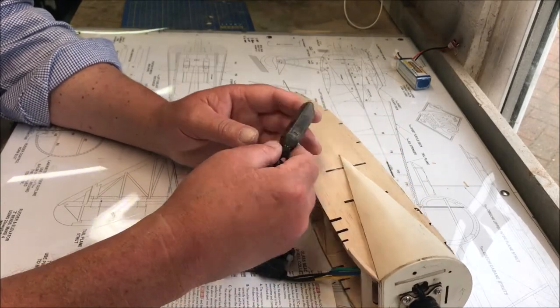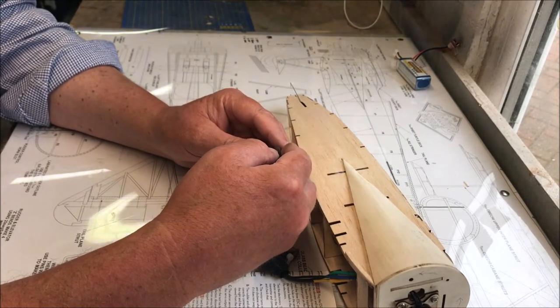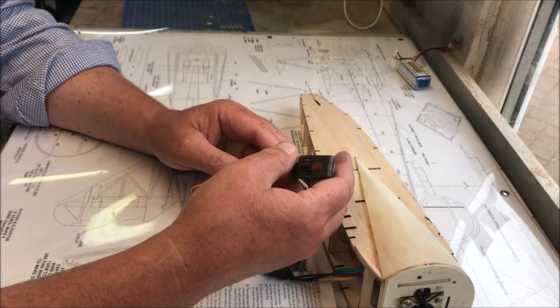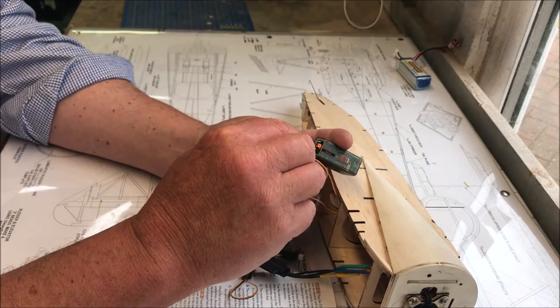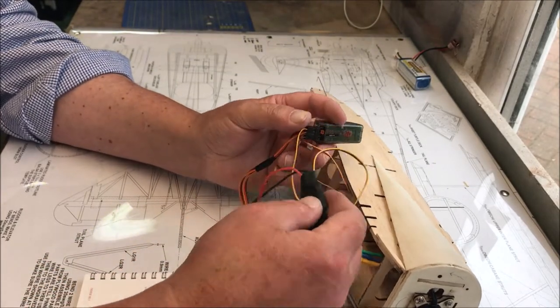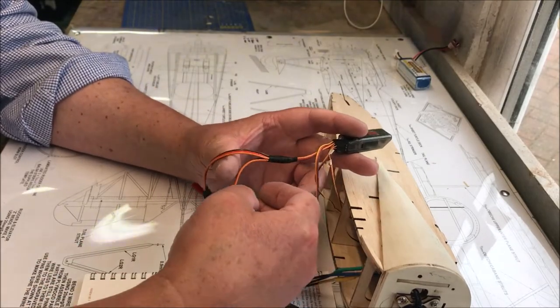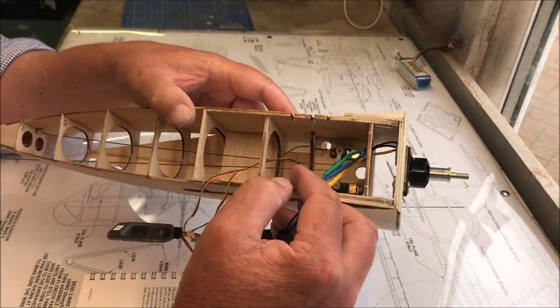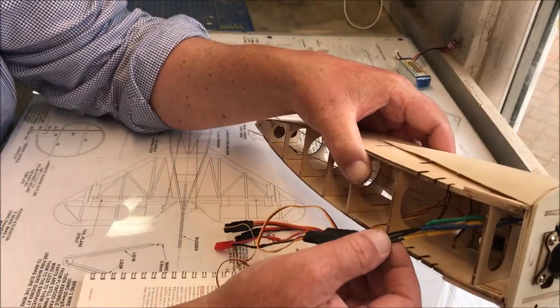I have marked on the plan the connections for the receiver. They show this receiver which is a Spektrum AR410. Number one is from the ESC or speed controller. Number two is ailerons which is your Y-lead. Number three is elevator which is your servo, and number four is your rudder.